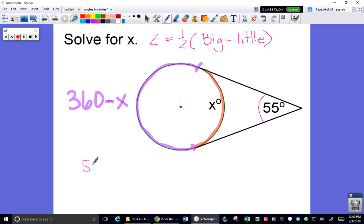So 55, my angle, equals half of my big arc, 360 minus x. And it gets parentheses because it's an expression. Minus the little arc of x. Big arc minus little arc. So now let's solve.